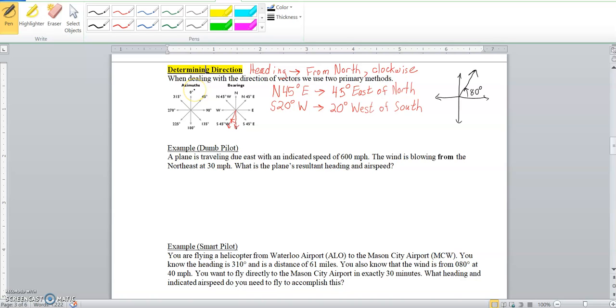This azimuth method would be, we would actually call that, rather than calling that 80 degrees from horizon, that would actually just be 010.